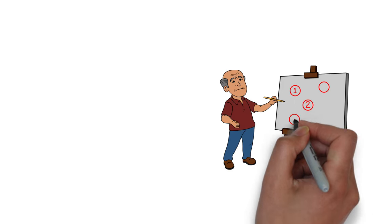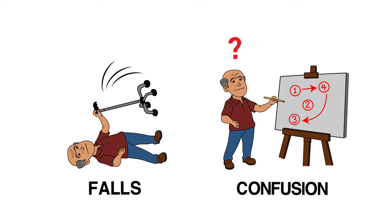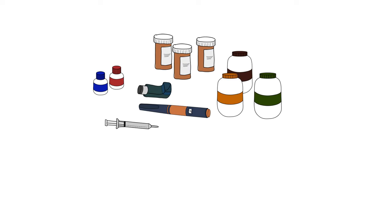Side effects can contribute to many problems we see in older people like falls and confusion. When the risks of medication use start to outweigh the benefits, we call this problem polypharmacy. Polypharmacy is especially problematic for older people who are frail.